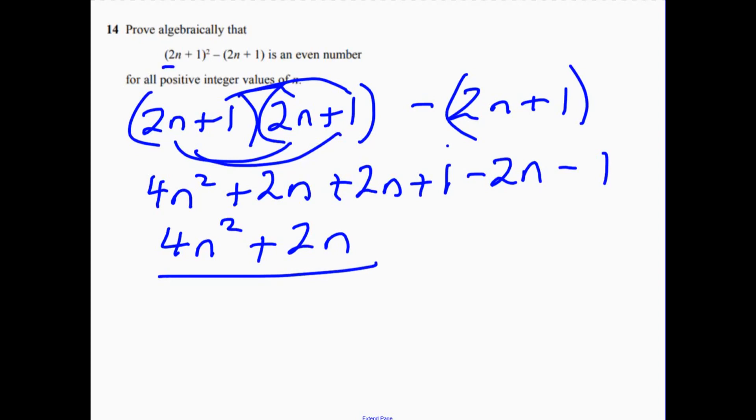So prove algebraically that this is an even number. To show something's an even number, you just need to show it's multiplied by 2. So if you take out 2 as a common factor, we get this.